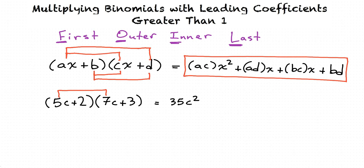Now we need to add this to the product of the outside terms, which are 5c and 3. 5c times 3 equals 15c, so we now have 35c squared plus 15c.